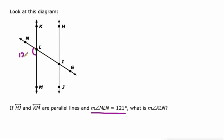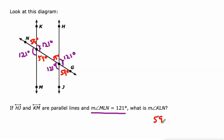MLN — that's this one, 121 degrees. These are vertical angles. This is a corresponding angle to NMJ, and this is an alternate exterior angle to NMJ. The rest of the angles are going to be 59 degrees because they again will be supplementary to NMJ. So the only thing we're charged with is finding out which one it is — 59 or 121? KLN is what we're looking for, and KLN is a 59 degree angle. It's supplementary to angle NLM.